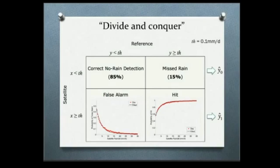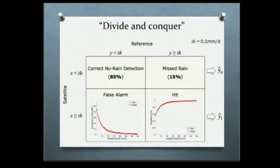However, the satellite might also miss that event — in that case, the reference is zero but the truth is saying rain: a missed event. The numbers you see are probabilities. The correct no-rain detection over Oklahoma, which is my region of interest, over the period 1998 to 2011, is 85%. That means 85% of the times the satellite measures zero, it's correct. But 15% of the time it misses. The idea for the model is to come up with an estimate of the reference rainfall when the satellite is measuring zero.